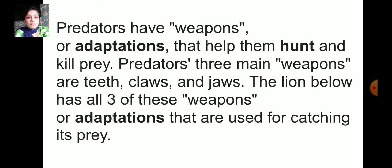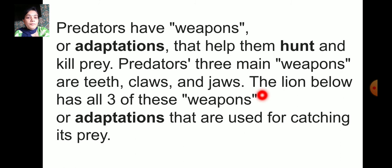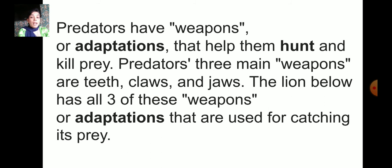Predators have weapons or adaptations that help them hunt and kill prey. Predators — animals that catch and kill other animals — have three main weapons: teeth, claws, and jaws. The lion has all three of these weapons and adaptations used for catching its prey.